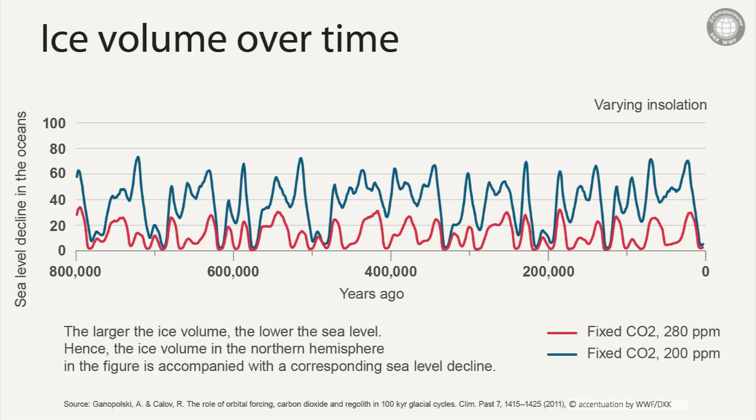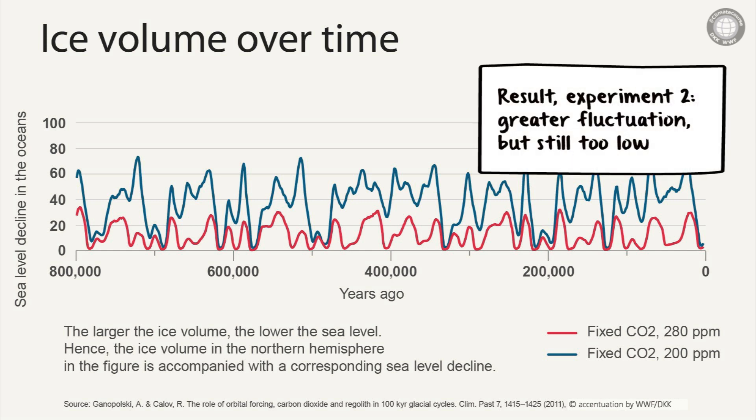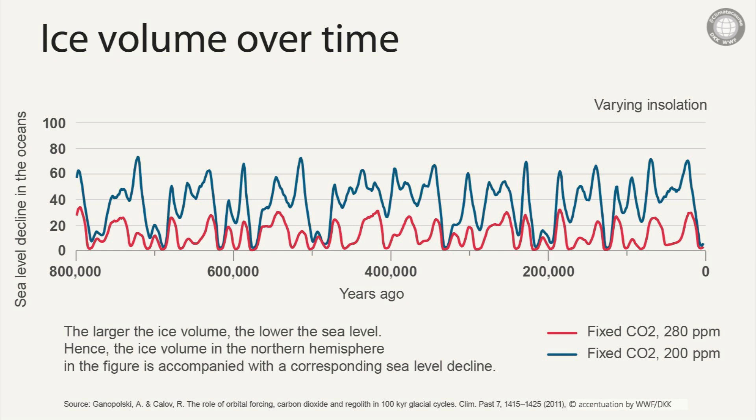In a second experiment, the radiation is allowed to vary as in the first experiment, but now the concentration of CO2 in the atmosphere is set to a significantly lower value of 200 ppm. As illustrated by the blue line, the model shows that reducing the CO2 level to 200 ppm results in fluctuations in the ice volume with a larger amplitude between interglacial and glacial periods. The previous experiment only simulated ice volume fluctuations corresponding to sea level fluctuations of less than 40 m. In contrast, values of about 70 m sea level change are now simulated with a reduced CO2 concentration.